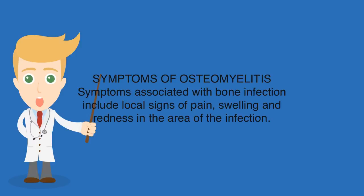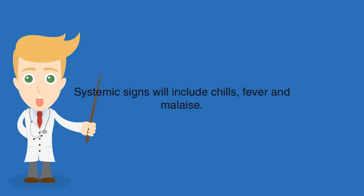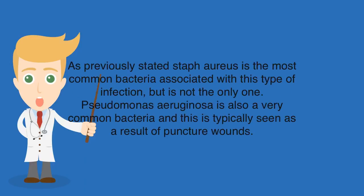Symptoms of Osteomyelitis. Symptoms associated with bone infection include local signs of pain, swelling and redness in the area of the infection. Systemic signs will include chills, fever and malaise. As previously stated, Staph aureus is the most common bacteria associated with this type of infection, but is not the only one.